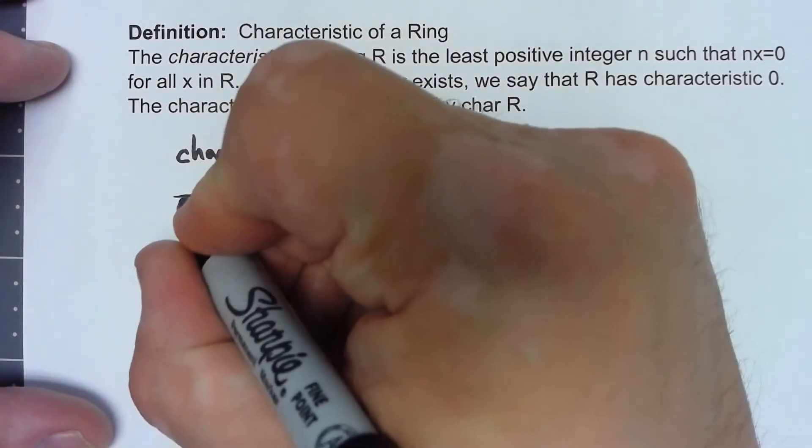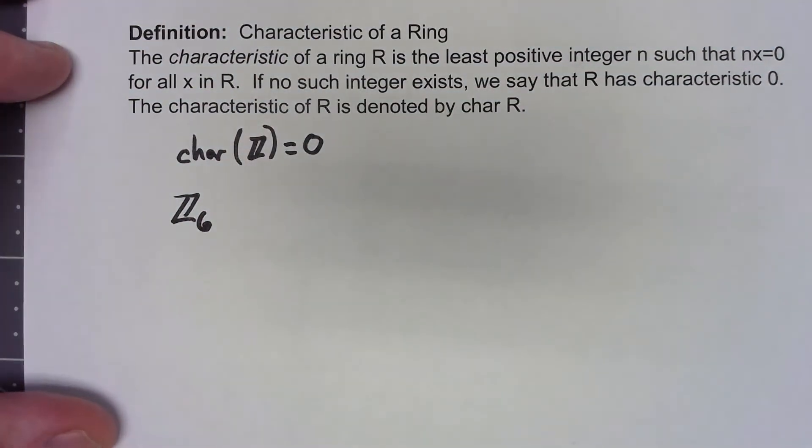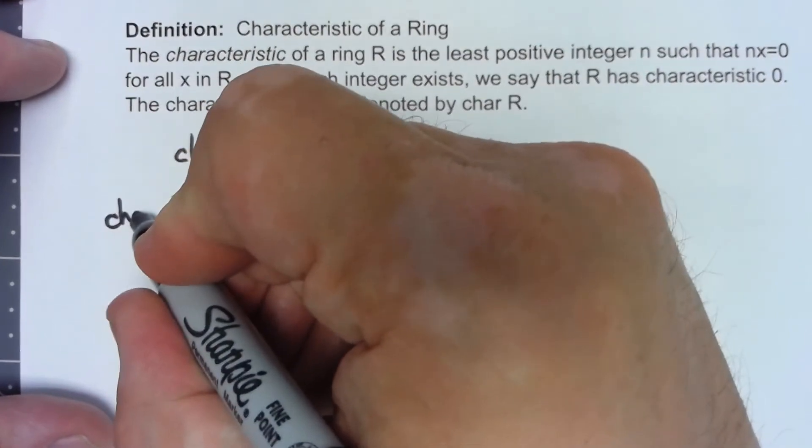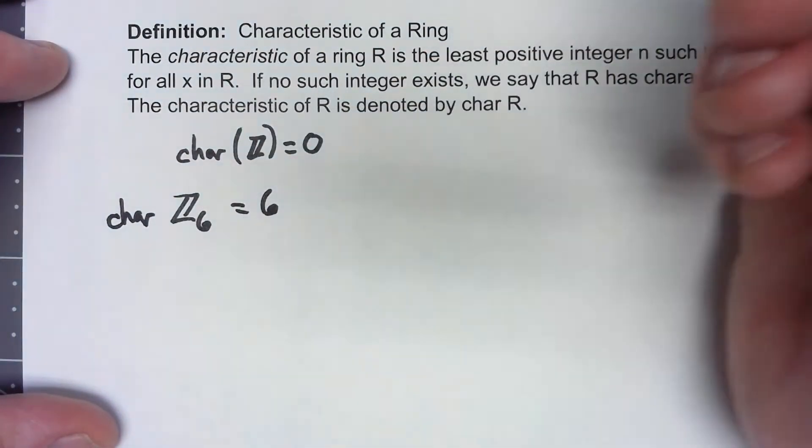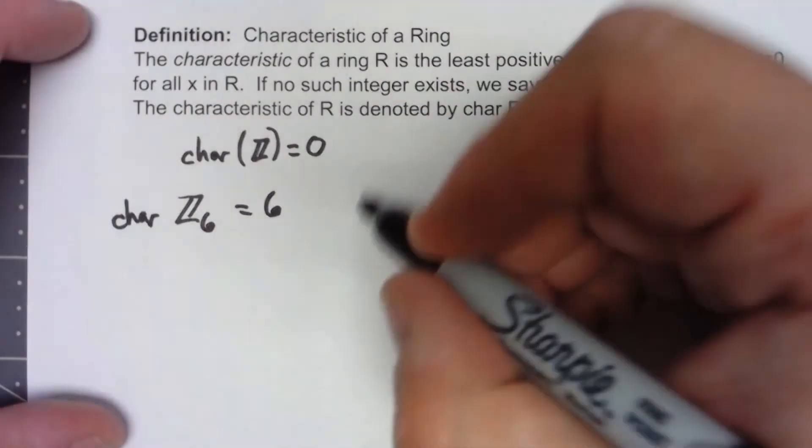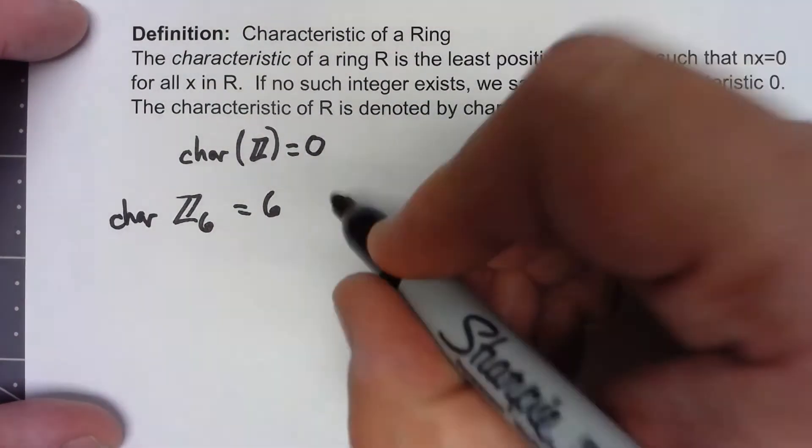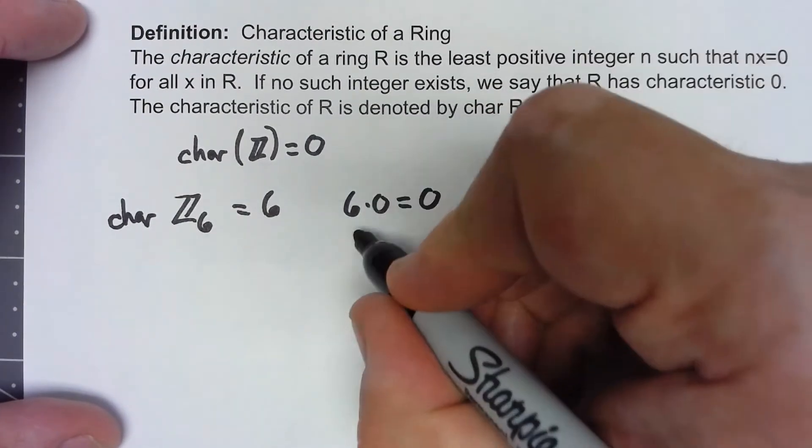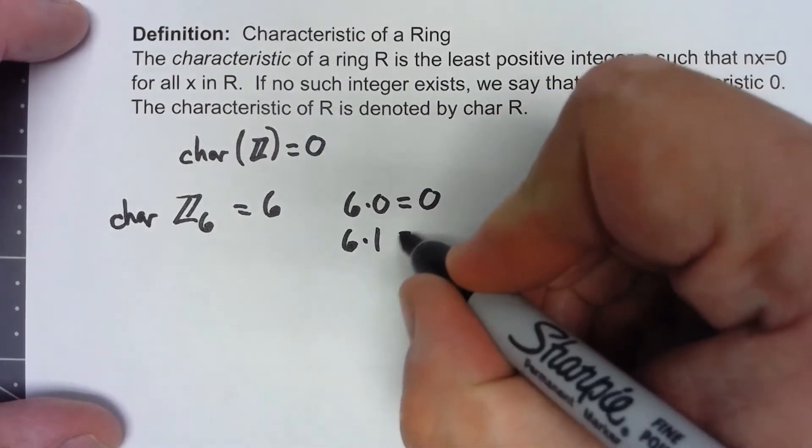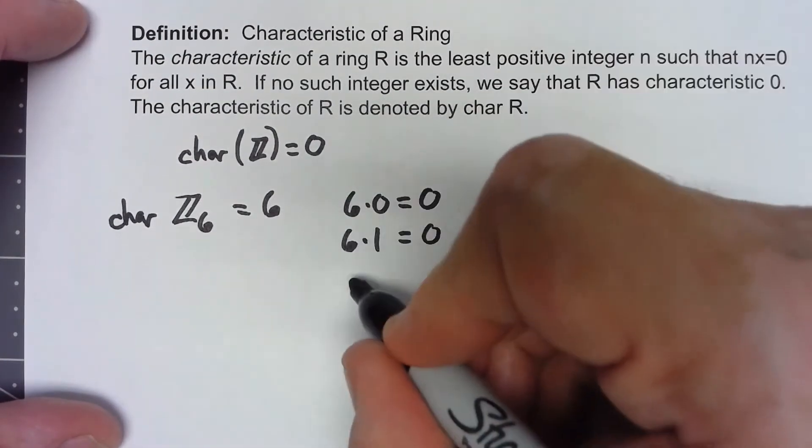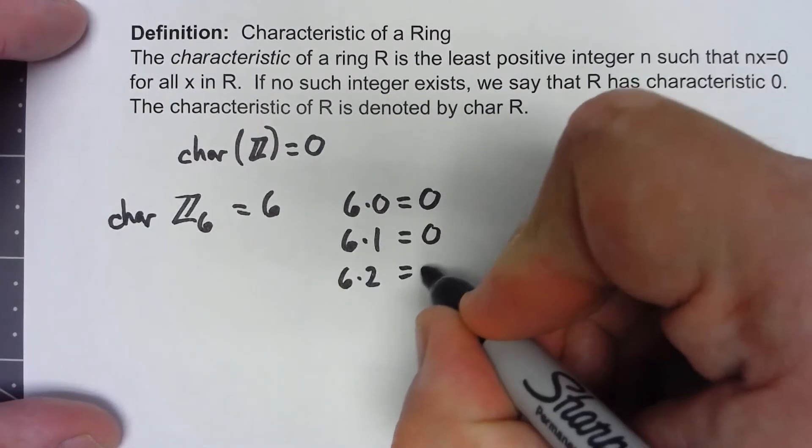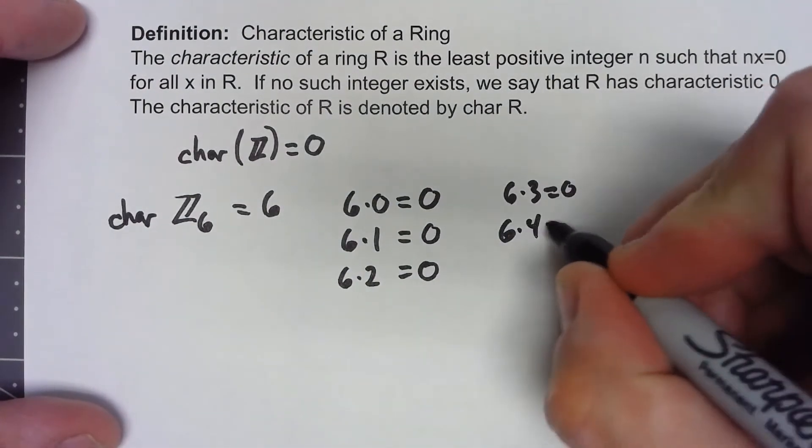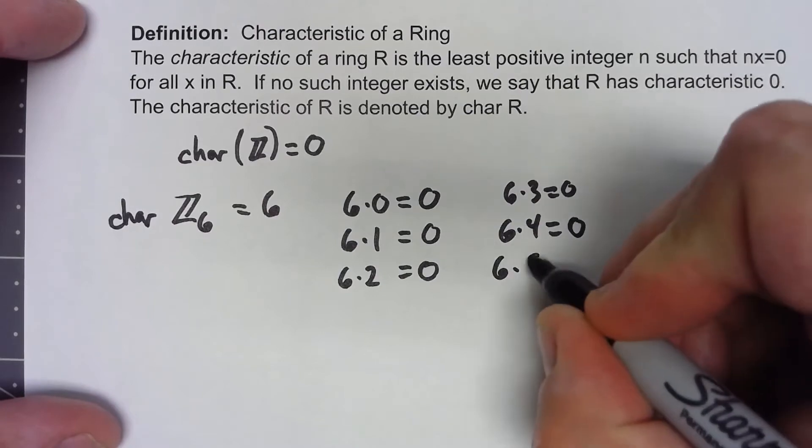But let's look at Z6. The characteristic of Z6 is equal to 6. Why is that? Well, certainly 6 times 0 is giving us 0, 6 times 1 equals 0, 6 times 2 equals 0, 6 times 3 equals 0, 6 times 4 equals 0, 6 times 5 equals 0.